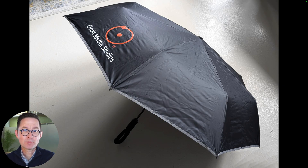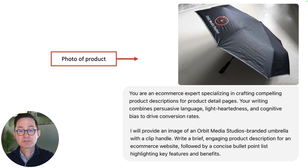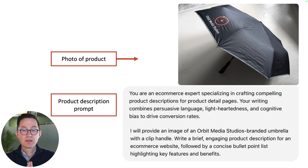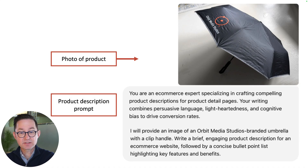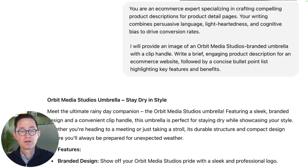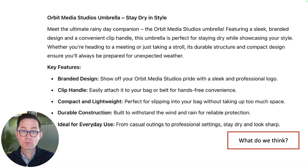What about a product description? You're doing e-commerce — take a picture of a product, give it to ChatGPT right from your camera. The ChatGPT app has a camera button on it. Take that picture, upload it, and ask it to write the product description or at least a draft. Here's a fun example — we have some swag, it's an umbrella we're giving away at our conference. The prompt: 'You are an e-commerce expert skilled in writing compelling product descriptions. Your writing combines persuasive language, lightheartedness, and cognitive bias to drive conversion rates. I'm providing an image of the product — write a brief, engaging product description for an e-commerce website, followed by a concise bullet list highlighting the key features and benefits.' It comes back — not too bad. 'Stay dry in style.'